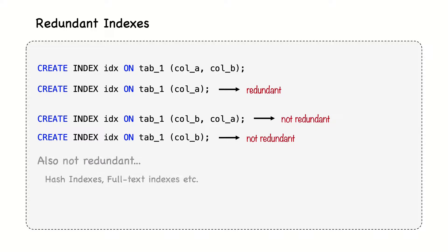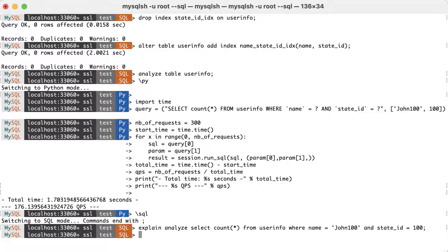Furthermore, indexes of different types, such as hashes or full-text indexes, are not redundant to B-tree indexes, no matter what columns they cover. Let's see an example where we benchmark the adoption of redundant indexes.